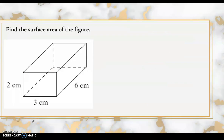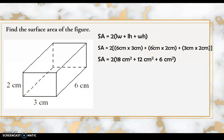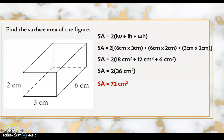Let's have more examples. Find the surface area of this figure. We don't need a net; we just follow the formula and substitute. The length is 6 centimeters, the width is 3 centimeters, and the height is 2 centimeters. Simplifying inside the parenthesis: 6 times 3 is 18, 6 times 2 is 12, and 3 times 2 is 6 square centimeters. Adding: 18 plus 12 plus 6 equals 36, then multiplied by 2. The surface area is 72 square centimeters.